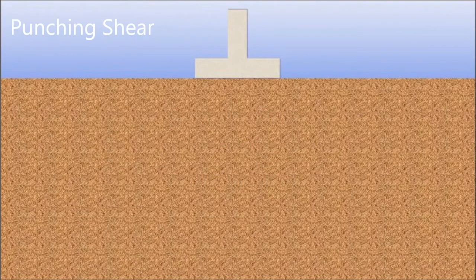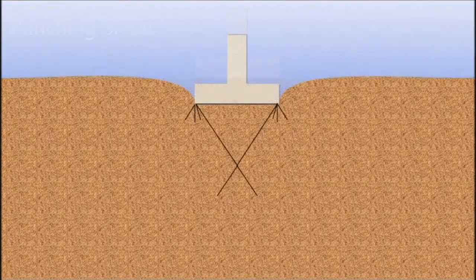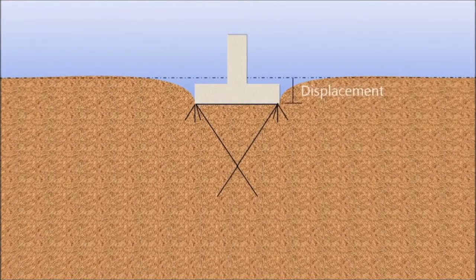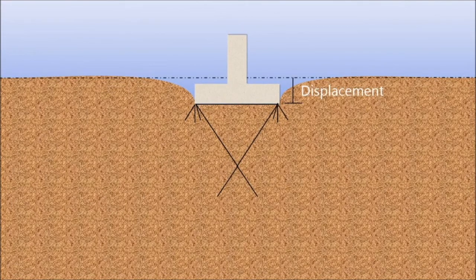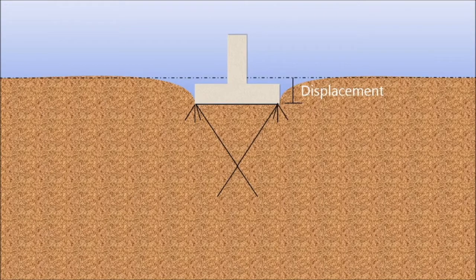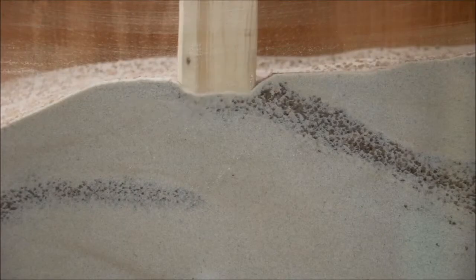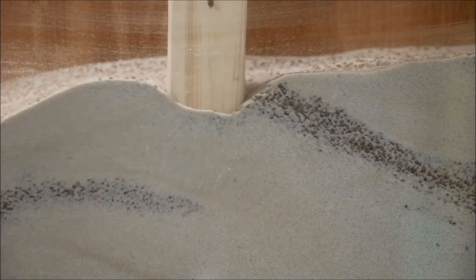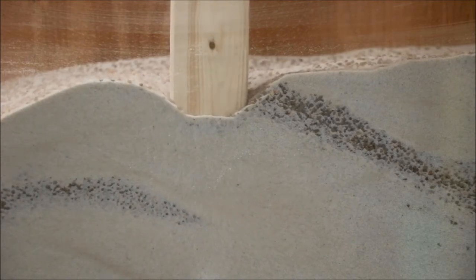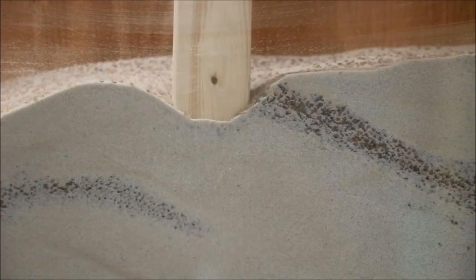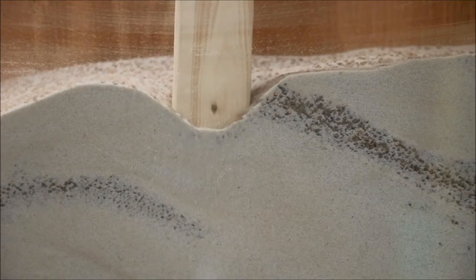One type of failure is punching shear. This generally happens in loose sands, thin layers of strong soil underlaid by weak soils, and in weak clays which are loaded slowly. Failure develops gradually in this setting, due to the high compressibility of these soils. Little to no soil disturbance is seen at the surface when punching shear occurs, but structures experience high levels of settlement.